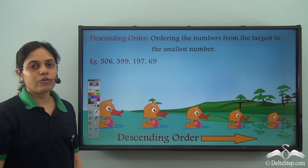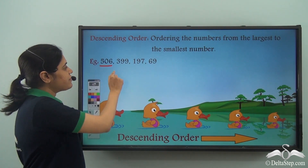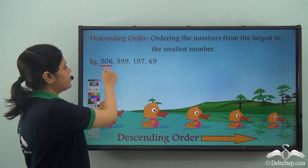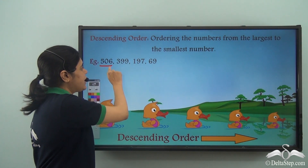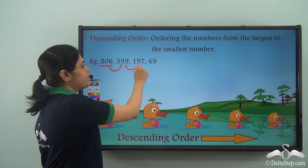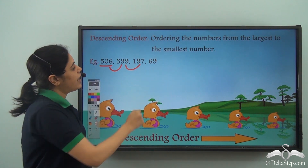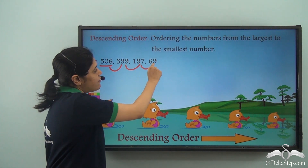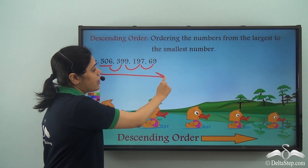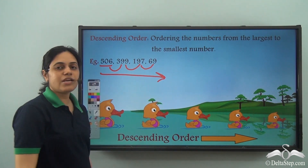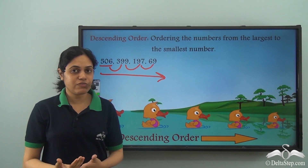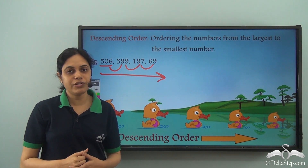So if we look at these numbers, 506 is the largest number. It is bigger than 399. 399 is bigger than 197, and 197 is bigger than 69. So these numbers are arranged in descending order. Do you recall the tricks for ordering or arranging the numbers?